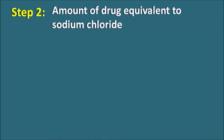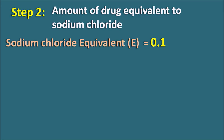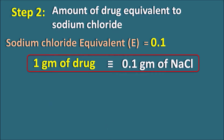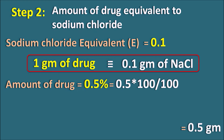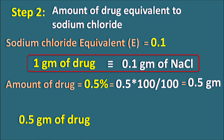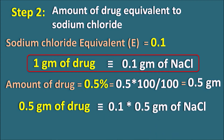Step 2 — amount of drug equivalent to Sodium Chloride. This is obtained from the Sodium Chloride Equivalent value. The E value for this drug is 0.1, which means 1 gram of the drug is equivalent to 0.1 grams of Sodium Chloride. The amount of drug in the solution is 0.5% in 100 ml, which equals 0.5 × 100/100 = 0.5 grams. Therefore, 0.5 grams of drug is equivalent to 0.1 × 0.5 = 0.05 grams of Sodium Chloride.